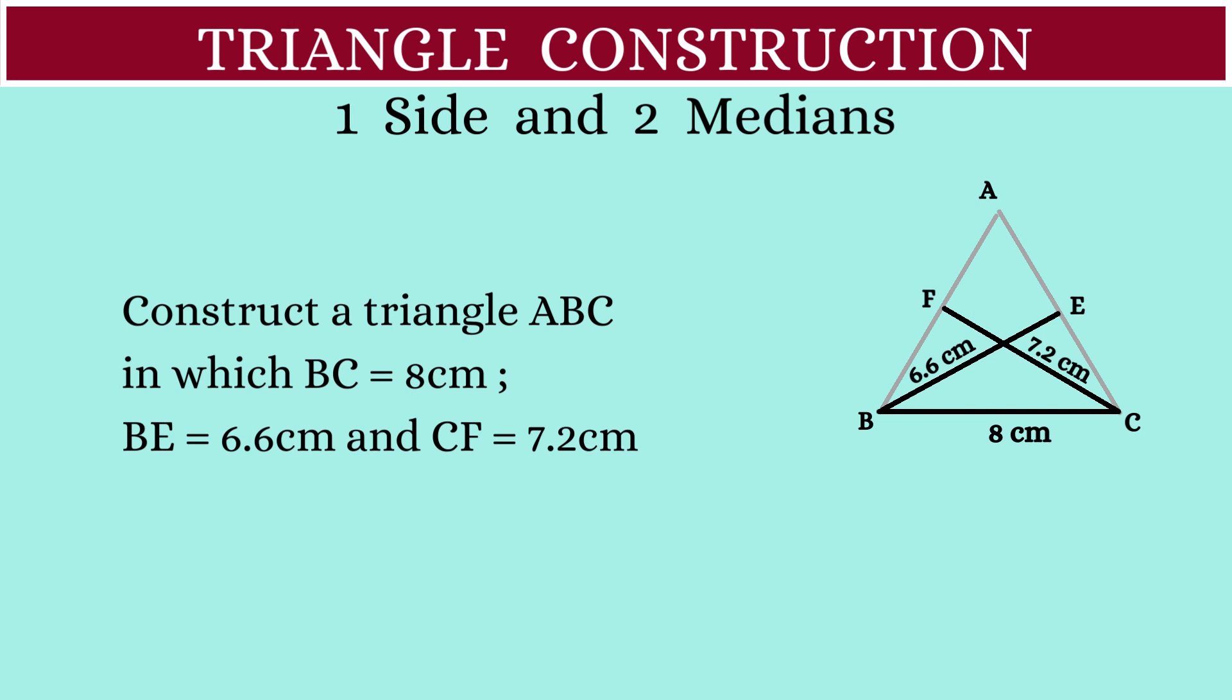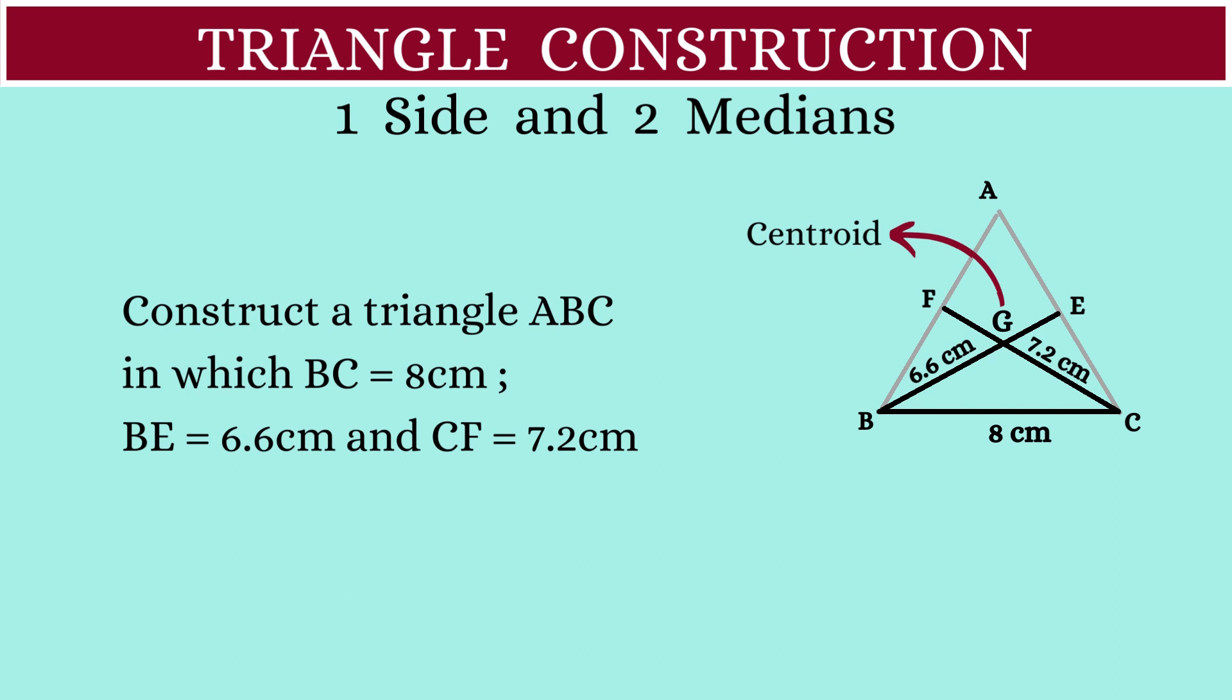Now, let the point where the two medians intersect be G. This is the centroid of the triangle. The centroid will divide the median in the ratio 2 is to 1.